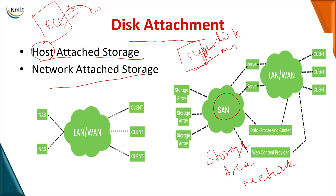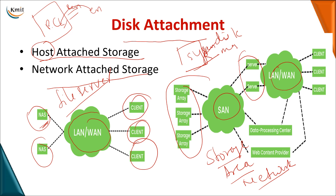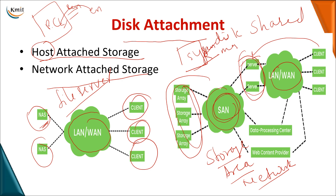In network-attached storage (NAS), you have a network — whether LAN or WAN — with a central storage device that acts as a file server. All systems connected to that network can access data from this file server. In a storage area network (SAN), multiple storage devices or NAS units can be combined together. Clients access data from servers, and the SAN accesses a shared storage repository. You can retrieve data from any storage array and provide it to the client. SAN is a combination of multiple networks, whereas NAS is a single network.